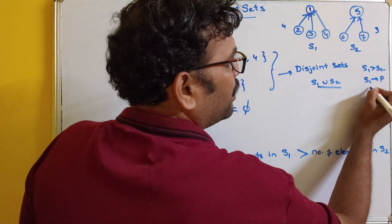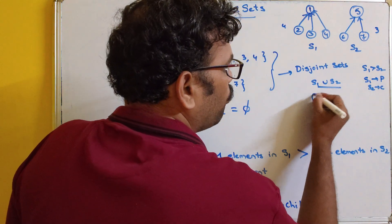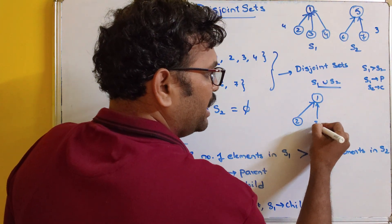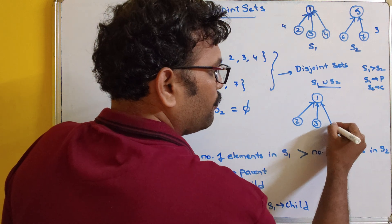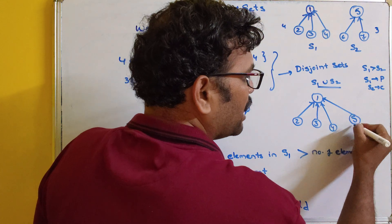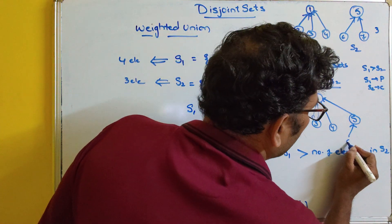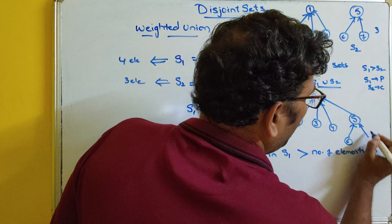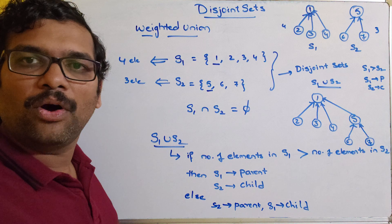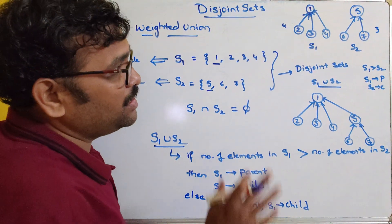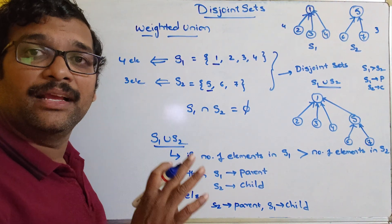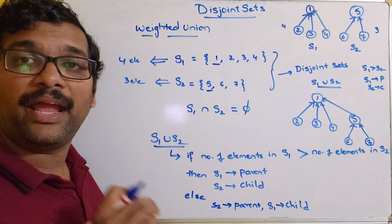So S1 will be the parent and 5 will be another child of 1, which will have two more children: 6 and 7. This is how we perform the union operation. Based upon the number of nodes in that particular set, we decide the parent set and the child set.